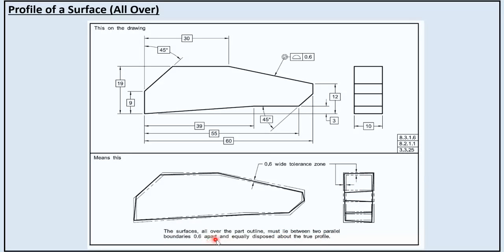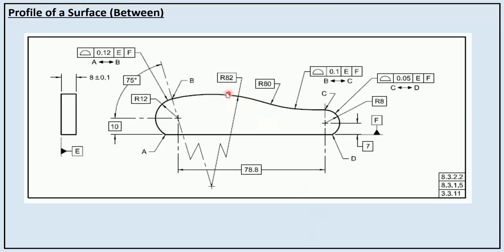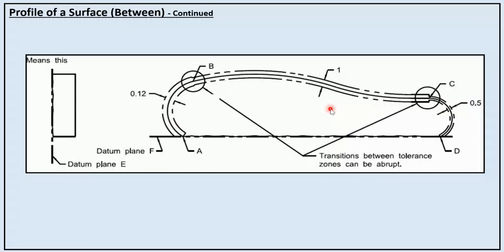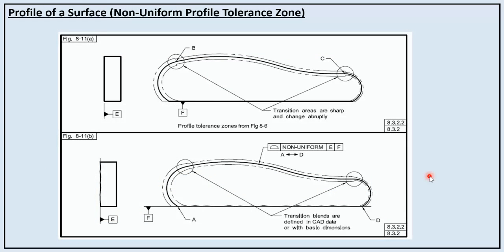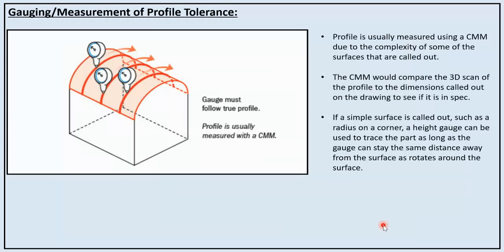For profile of a surface between specified points, we specify the range such as starting point A-B and E-F. For example, profile of a surface with geometrical tolerance 0.2 with respect to E and F between A and B, and 0.1 E-F between B and C. However, when applying profile between various surfaces there will be transitions that are not defined properly, resulting in abrupt transitions between tolerance zones. In this case a new modifier, non-uniform, is used between E and F considering the whole surface A to D, where transition blends are defined in CAD data or with basic dimensions.